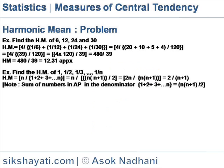Now we illustrate by an example how the Harmonic Mean (HM) is computed from a set of observations. Here we find the HM of 6, 12, 24, and 30. The HM is calculated as 4 divided by the sum of the inverses of the numbers.